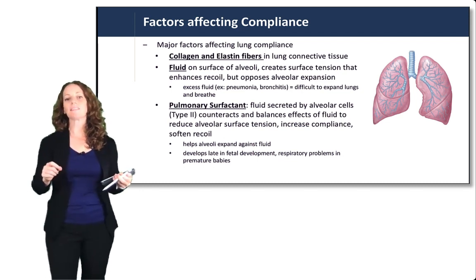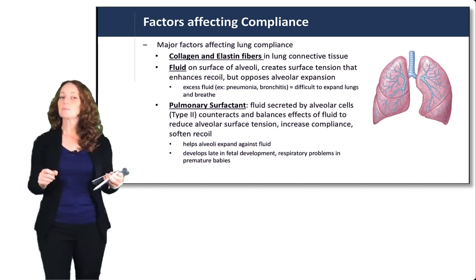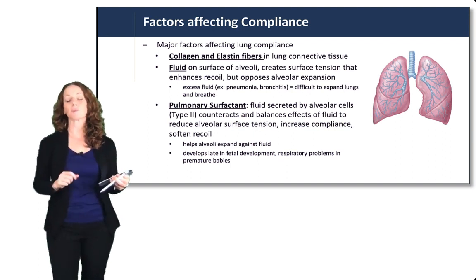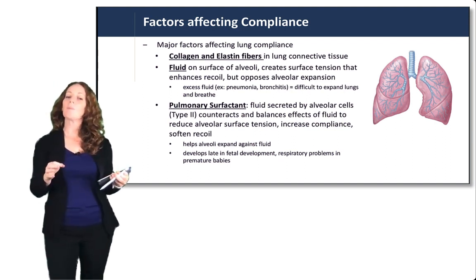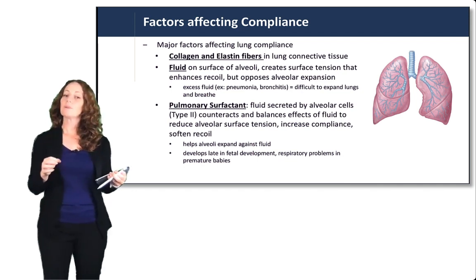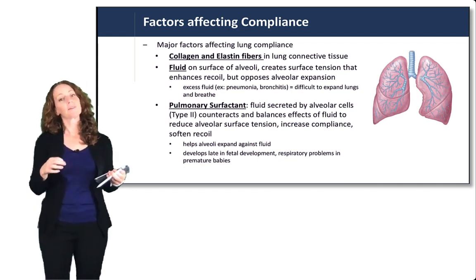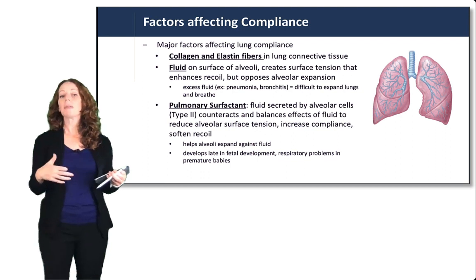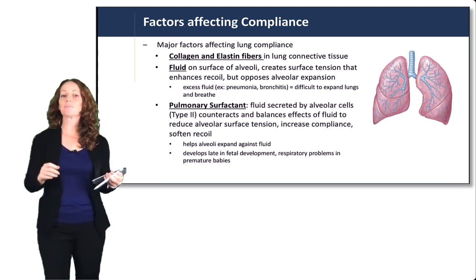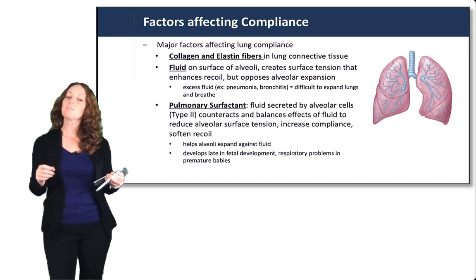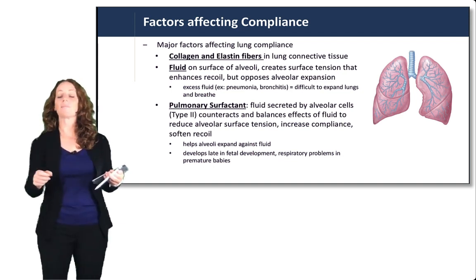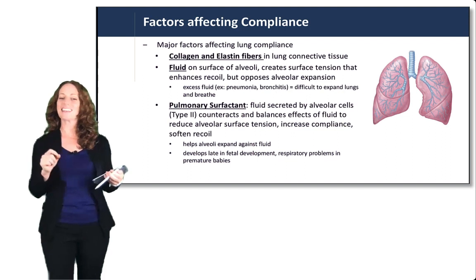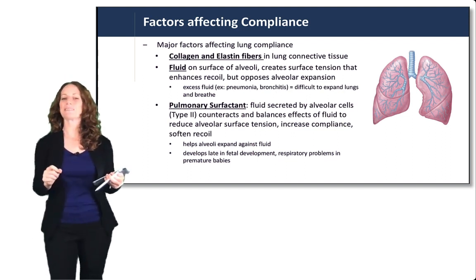Surfactant develops late in fetal development, which can lead to respiratory problems in premature babies born before their type 2 alveolar cells have matured. Mothers at risk for preterm labor can be given medications to mature the type 2 alveolar cells. Babies born prematurely can also be given surfactant directly into the lungs to replace what their lungs are not yet producing. Some of the earliest studies on surfactant in premature babies were done at UC Davis.